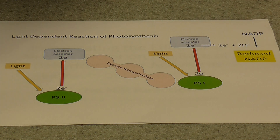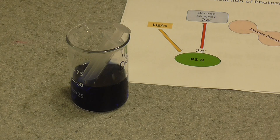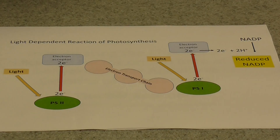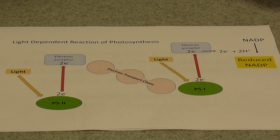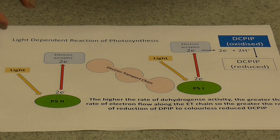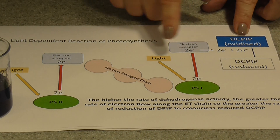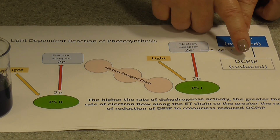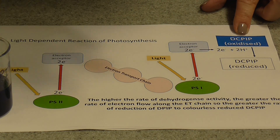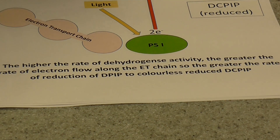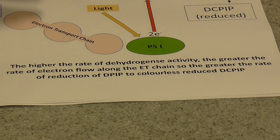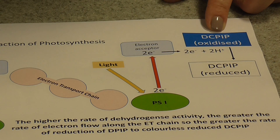In this experiment we're going to use a bright blue chemical called DCPIP, which is going to take the place of the coenzyme NADP. In its oxidised form it's a lovely bright inky blue colour, but when it becomes reduced as it picks up electrons it forms reduced DCPIP, which is completely colourless — so it will decolourise. The greater the activity of the dehydrogenase enzymes, the more quickly DCPIP will become reduced. We'll measure how long it takes for DCPIP to become totally decolourised.